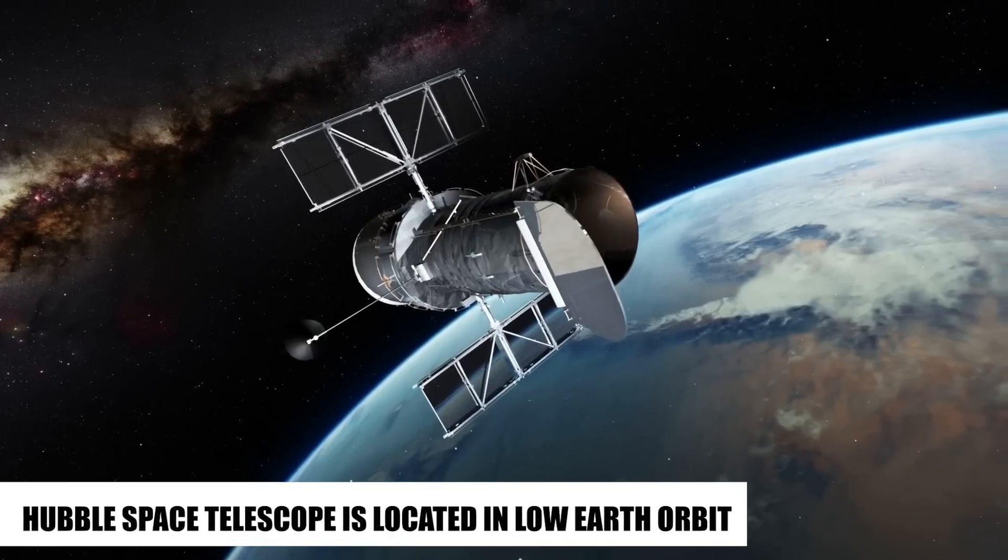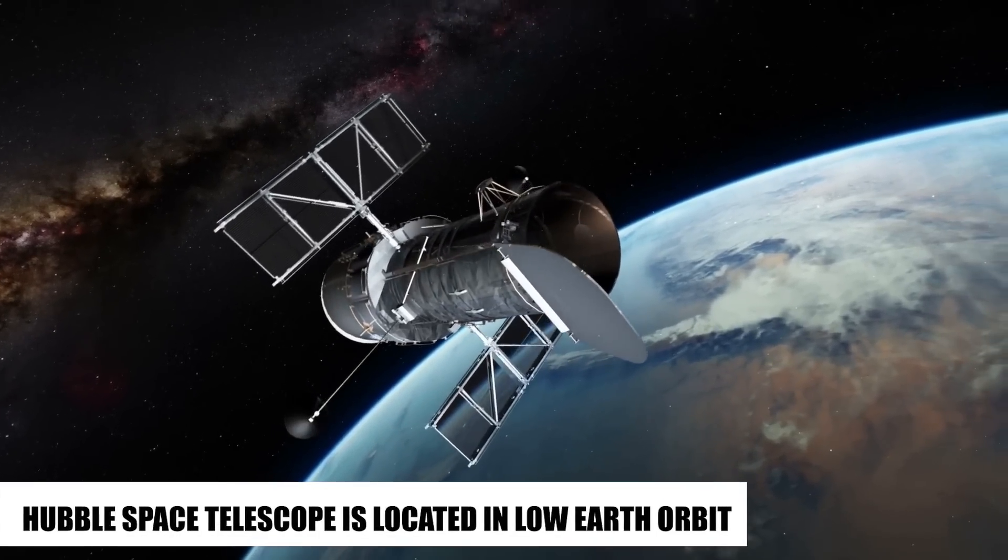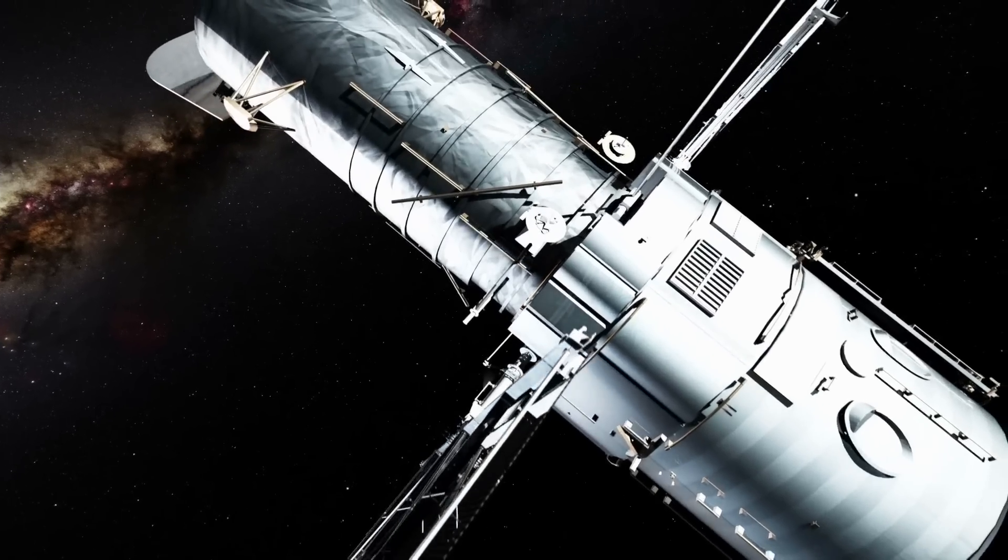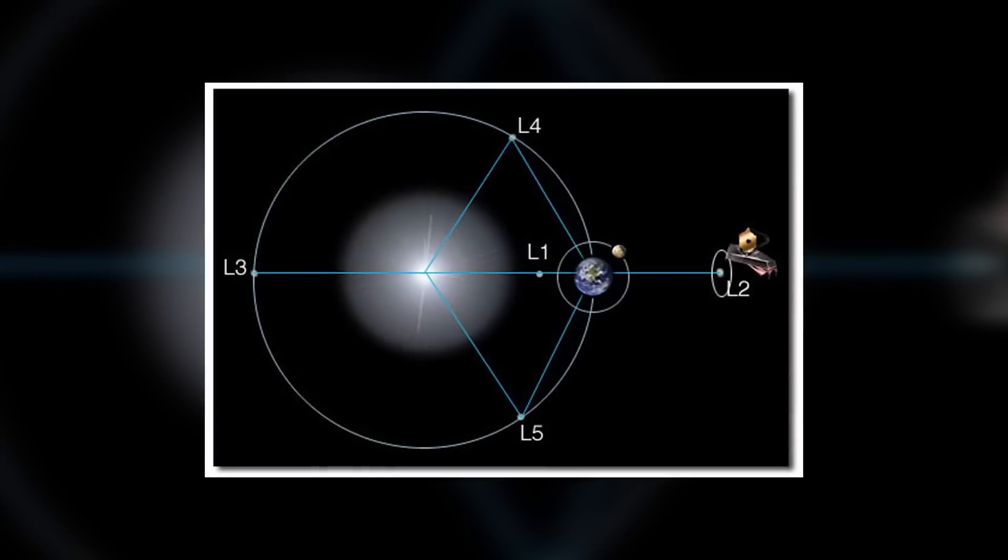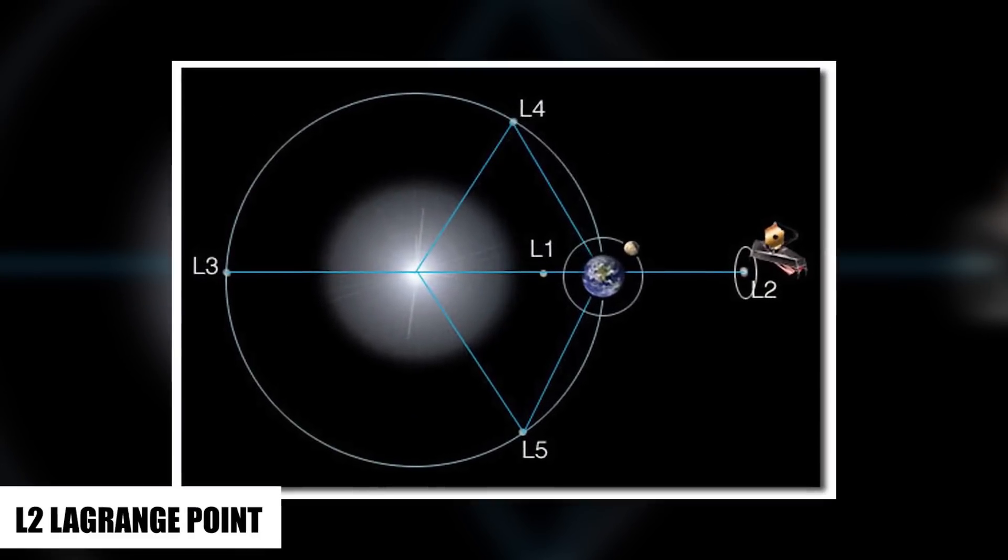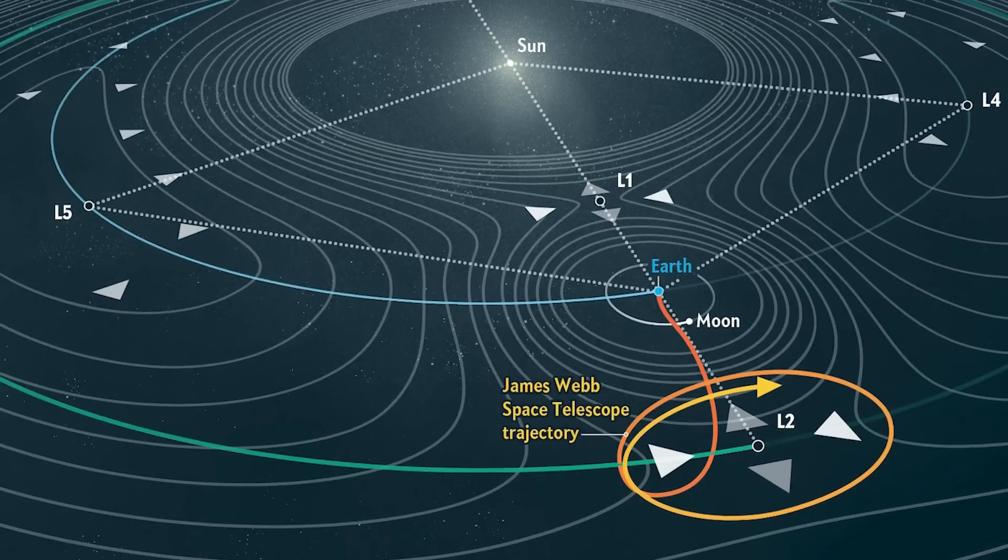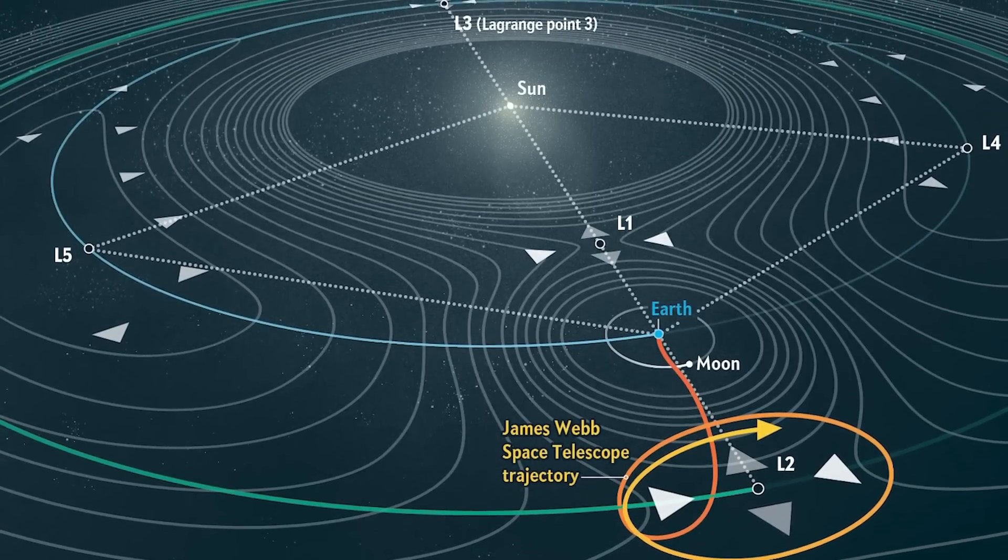It's fortunate that the Hubble Space Telescope is located in low Earth orbit. This makes it easy for astronauts to do maintenance on it whenever it is required. However, the JWST will be located in the L2 Lagrange point, which is a significant distance away. But could you perhaps explain the concept of a Lagrange point?